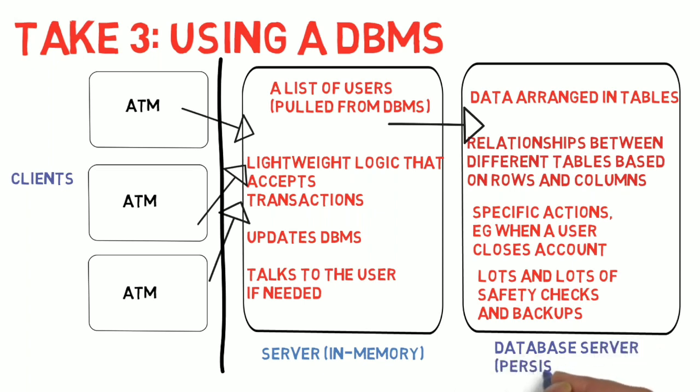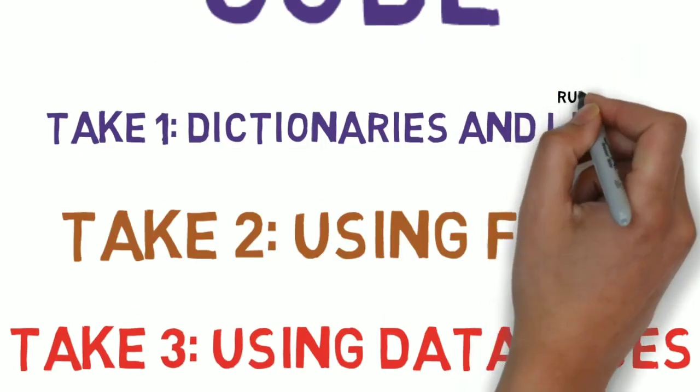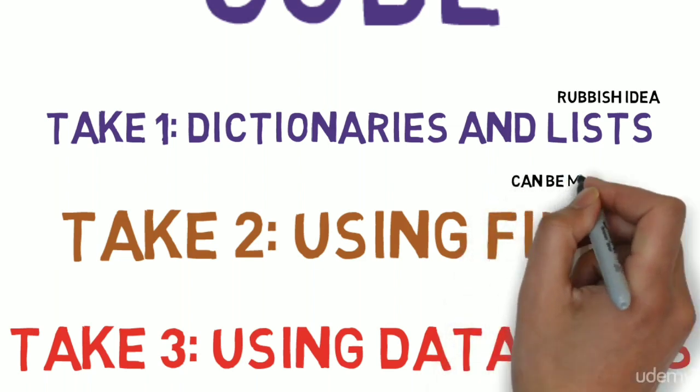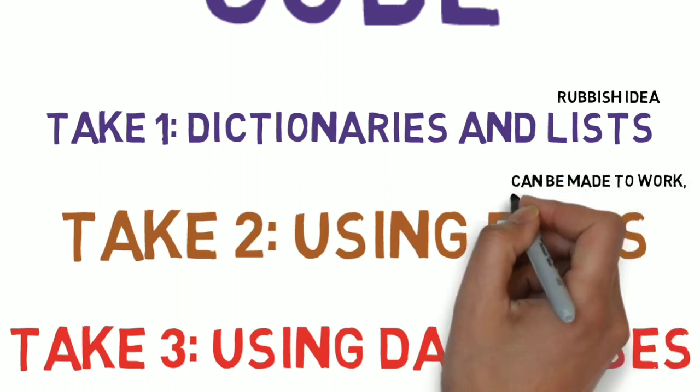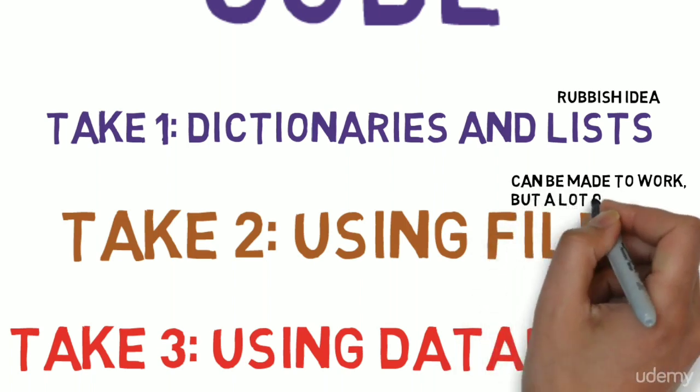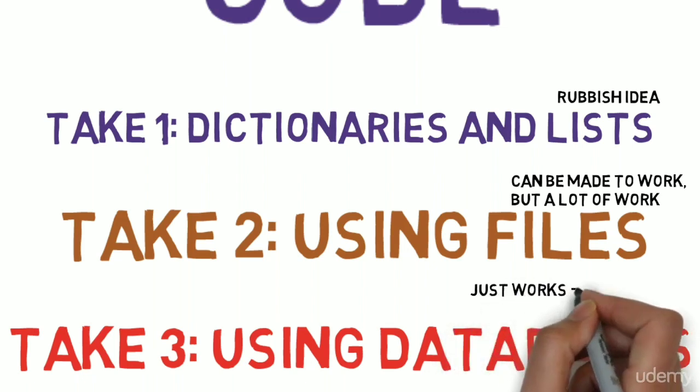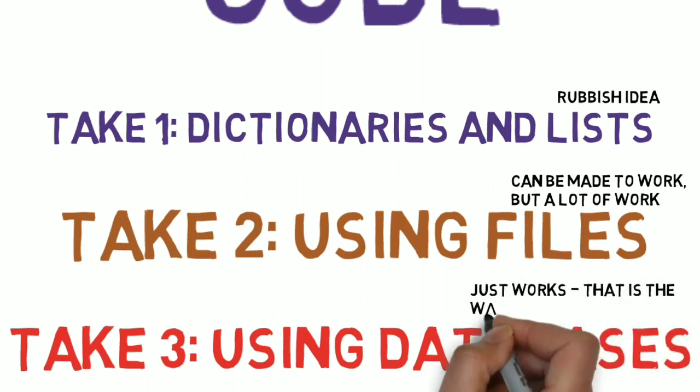The server reads data from the database, processes it in memory, and then writes it back to the database. And the data which is stored in the database server is always persistent. Therefore, of all the three options that we discussed, dictionaries or lists, using files or database, we saw that dictionaries and lists are just not a workable idea. Using files can be made to work, but it's just a lot of work. Using databases just works because they have been specifically designed to store data properly.